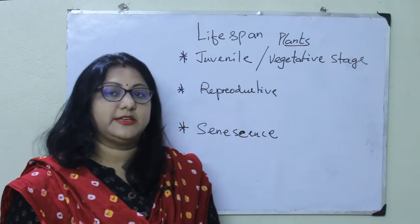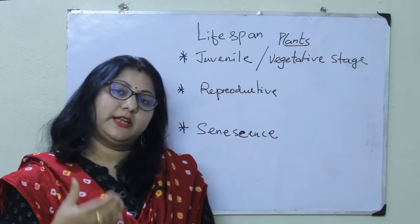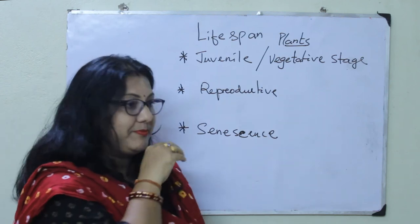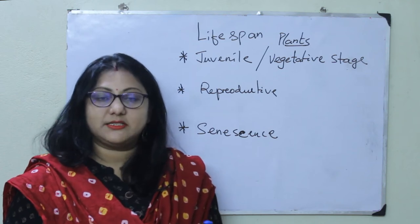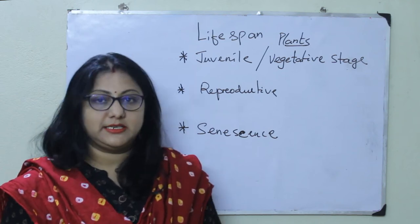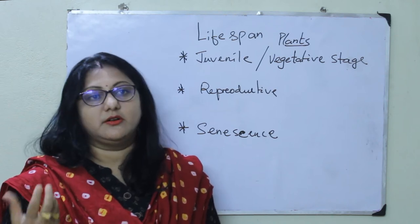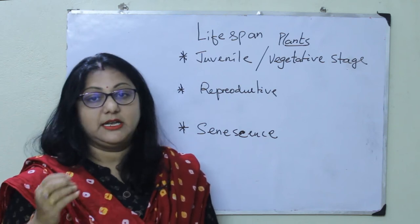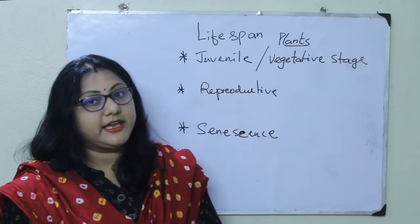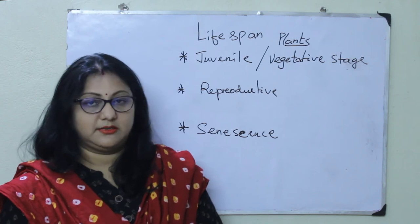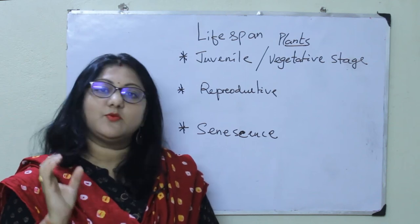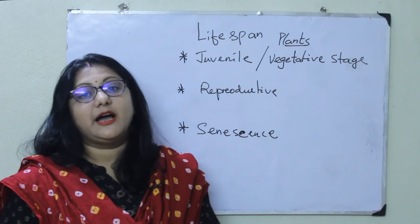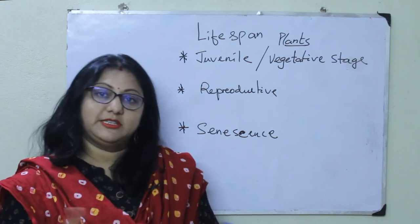The last phase is the senescence phase, which continues with the aging process. Slowly, the reproductive power of the organism slows down and the organism enters into a process of aging. Some plants grow within a year and then die — like grass, wheat, rice, and maize — these are called annual plants. The plants which grow in a certain season and die before the onset of the other season complete all three stages — the vegetative stage, then the reproductive stage, and then the senescence stage — within that one year. The plant dies within the year or within that season.